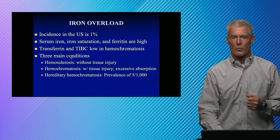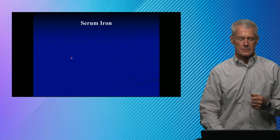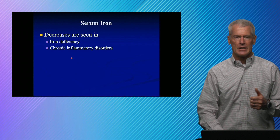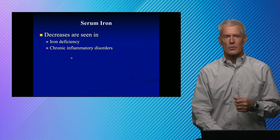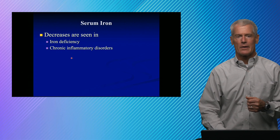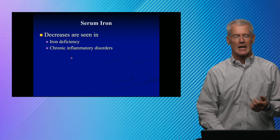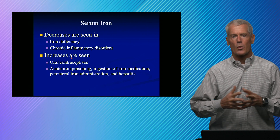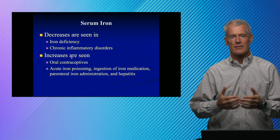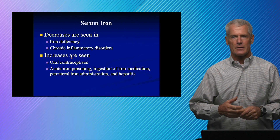Hereditary hemochromatosis happens in about five of a thousand people. Serum iron decreases — it makes sense in iron deficiency, it's going to be low. Chronic inflammatory diseases also give you low iron. Transferrin is a negative acute phase reactant — it goes up. Oral contraceptives increase a lot of binding proteins, including transferrin.